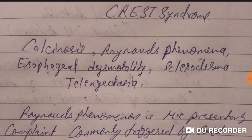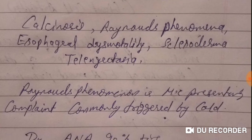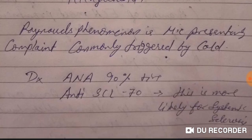C means Calcinosis, R represents Raynaud's phenomenon, E represents Esophageal dysmotility, S represents Scleroductly, and T represents Telangiectasia. So CREST syndrome is a collection of symptoms.